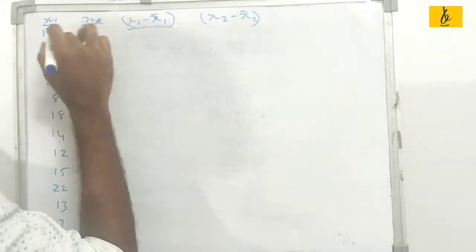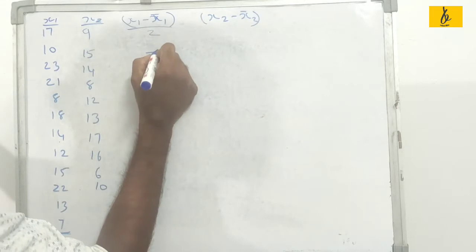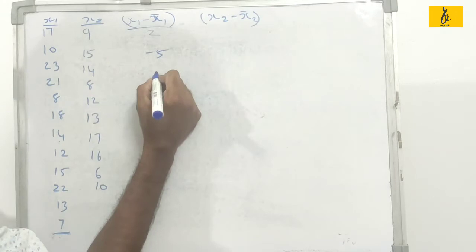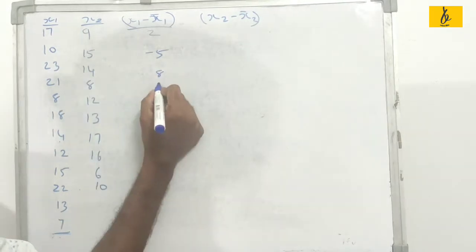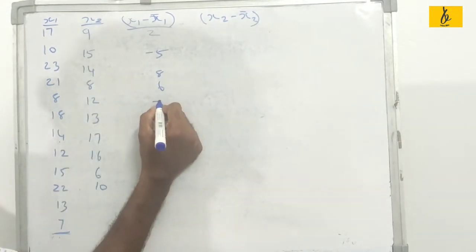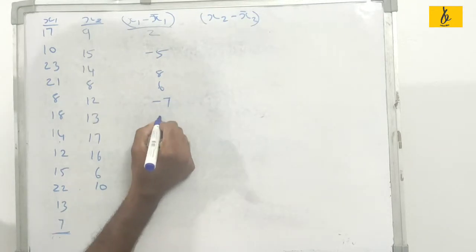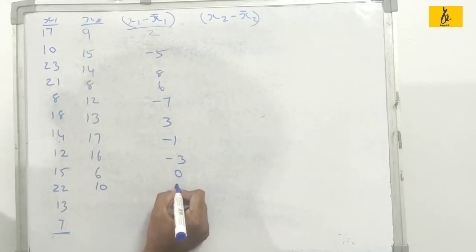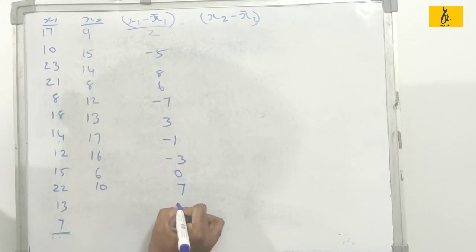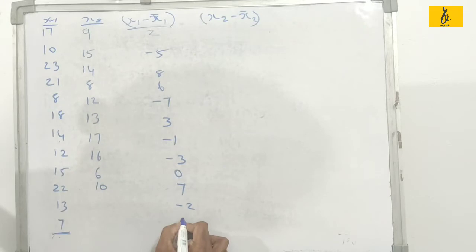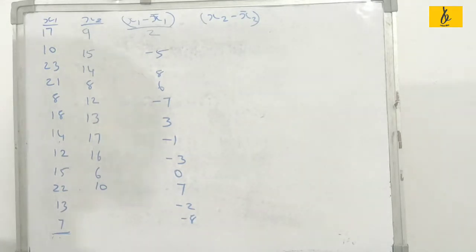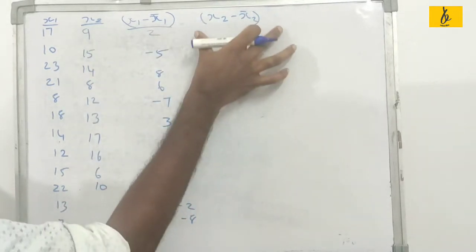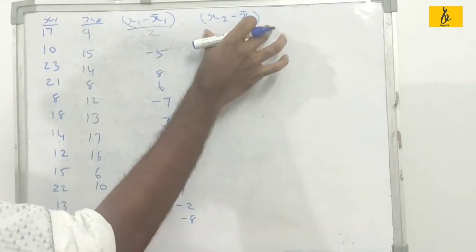Computing the deviations: x1 minus x1 bar gives values such as 10 minus 10 equals 0, 23 minus 19 gives 8, 1 minus 10 equals minus 9, 8 minus 10 equals minus 2, 7 minus 10 equals minus 3. Then for x2, x2 minus x2 bar is computed similarly.